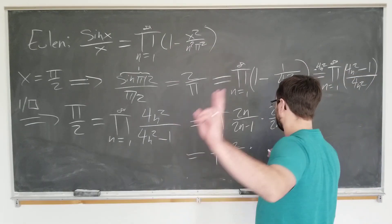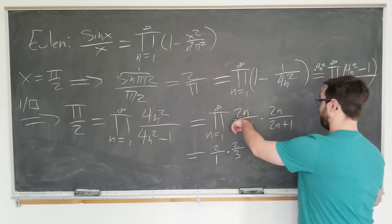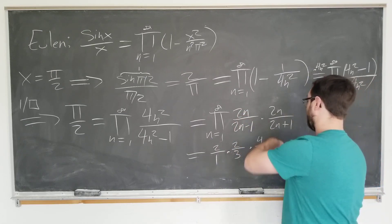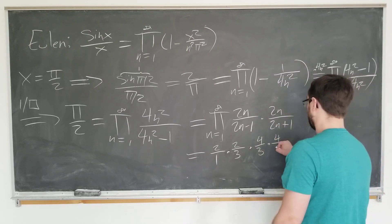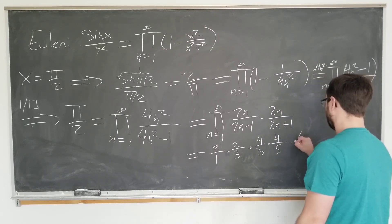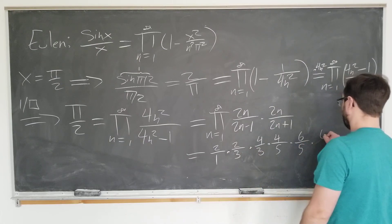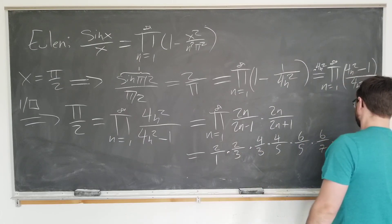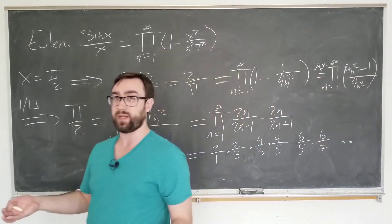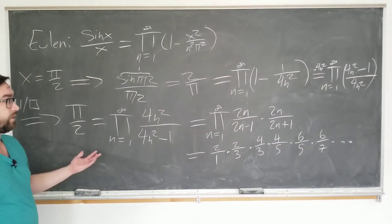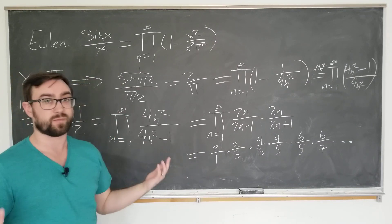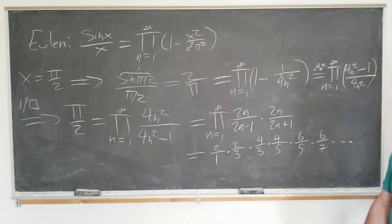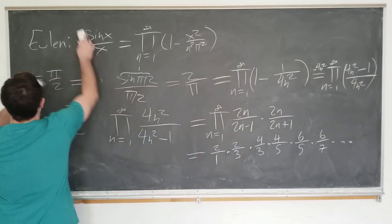And we look at n equals 2 now. So, we have 4 for this term. 2 times 2 is 4 minus 1 is 3. We've got another 4. 2 times 2 is 4 plus 1, which is 5. And we see how the pattern continues: 2, 2, 4, 4, 6, 6, 8, 8, etc., which is exactly what I wrote down in the beginning. And I think this is pretty cool. The Wallace formula for pi simply follows from plugging x equals pi over 2 into the Euler sine representation, which is pretty cool, I think. Now, let's look at a second method.